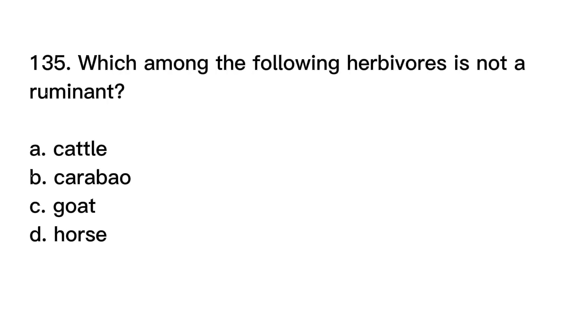Number 135. Which among the following herbivores is not a ruminant? A. Cattle. B. Carabao. C. Goat. D. Horse. Correct answer is letter D. Horse.